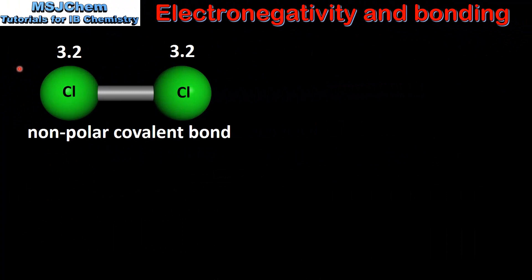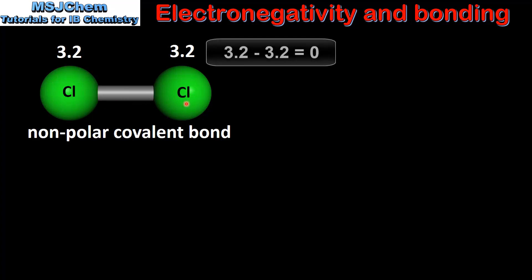Next we'll look at some examples, starting with a non-polar covalent bond. Here we have a molecule of chlorine which is composed of two chlorine atoms bonded together. Because we have two of the same kind of atom bonded together, the difference in electronegativity is 0, therefore it's a non-polar covalent bond.